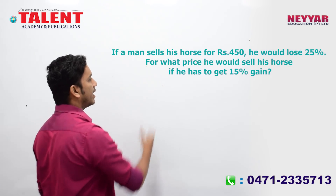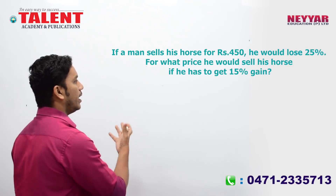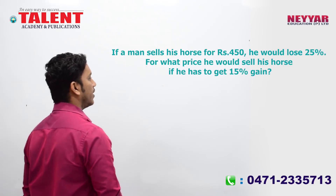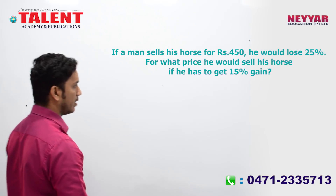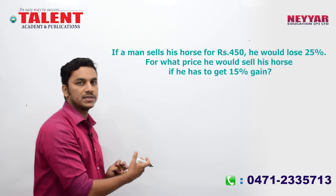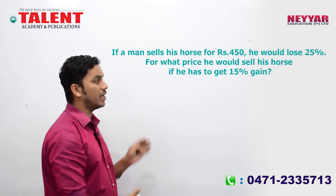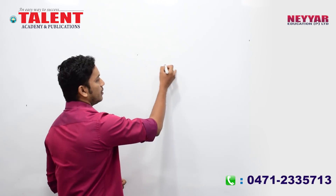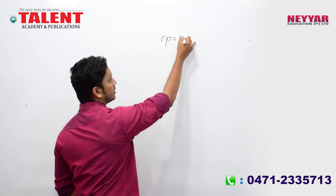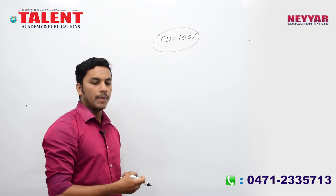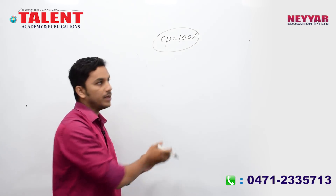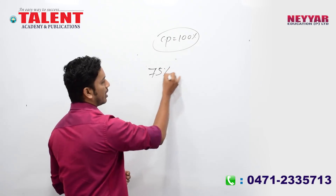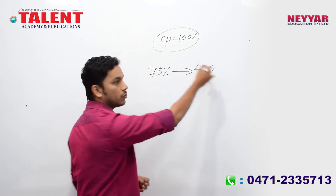If a man sells his horse for rupees 450, he would lose 25%. For what price should he sell if he has to get 15% gain? Working through: 25 loss means cost price is 75% of selling price. So 450 divided by 75... the answer is 690.